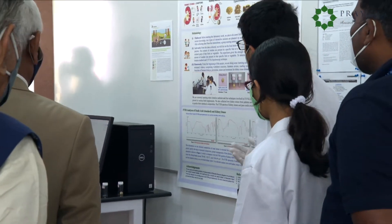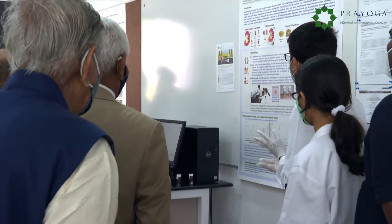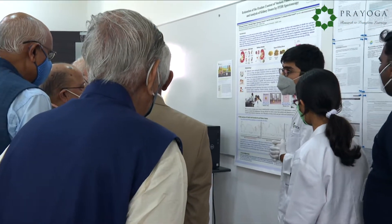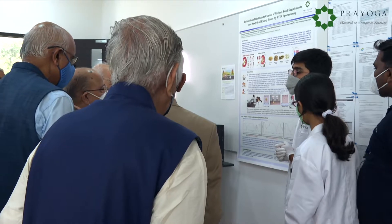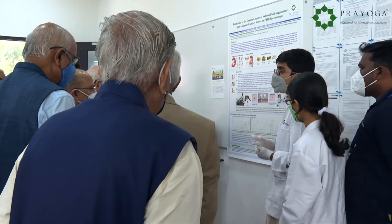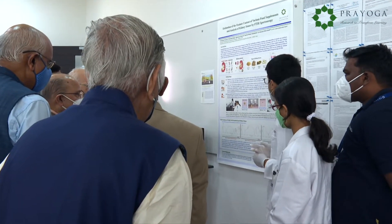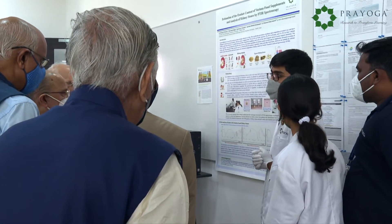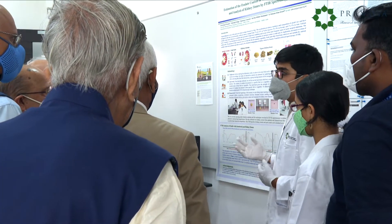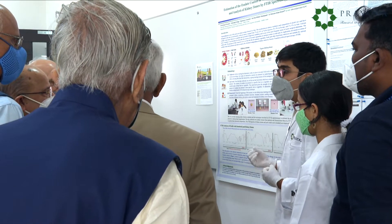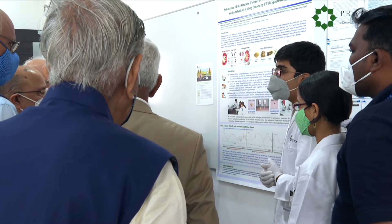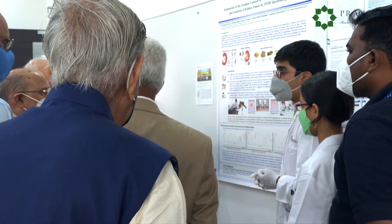In the future, we are learning redox titration methods and techniques involved in UV visible spectroscopy so that we can extract pulp from many more food supplements and estimate the amount of oxalic acid present in them. This data will be helpful for patients because they need to know what foods can or cannot be consumed if they have a calcium oxalate kidney stone.